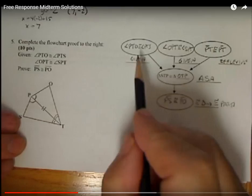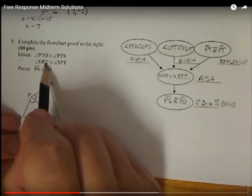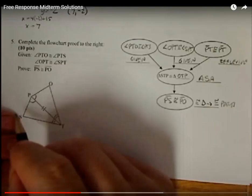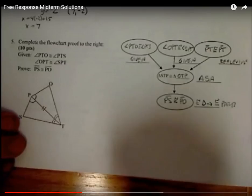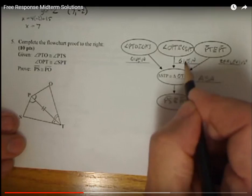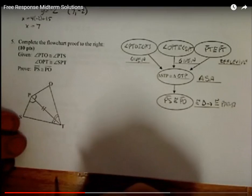Then I did angle OPT. So that's OPT is congruent to SPT. Mark those with single arcs. It doesn't matter which way you want to mark them. That also was given. So I just put it into the box and wrote given. We have one more piece of information we need to use. And the two things you want to watch for are vertical angles and reflexive. PT equals itself. So I have PT congruent to PT. That's called reflexive.